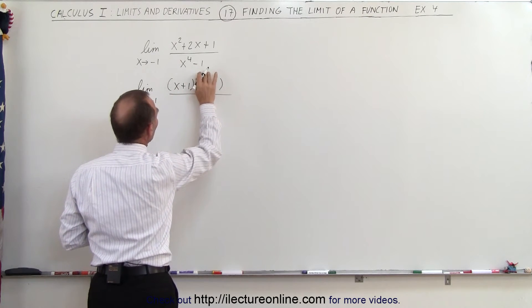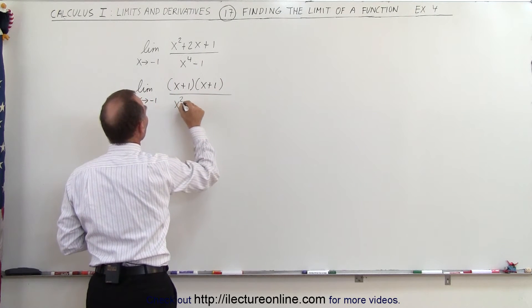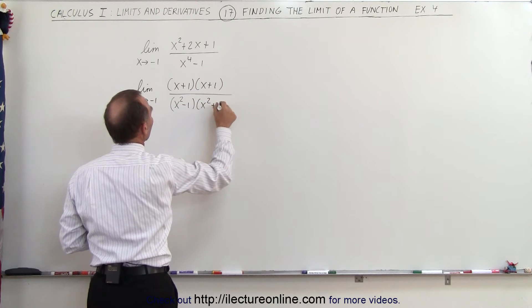The denominator is the difference of squares, so this can be written as x squared minus 1 times x squared plus 1.